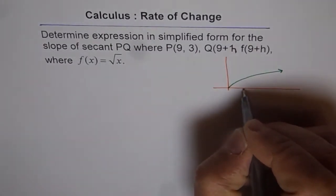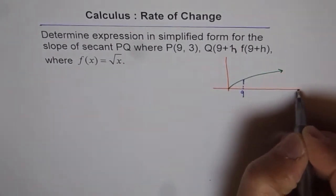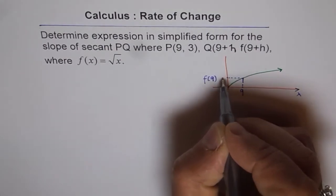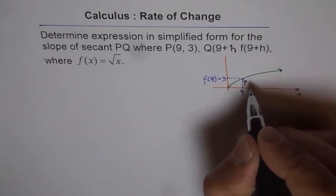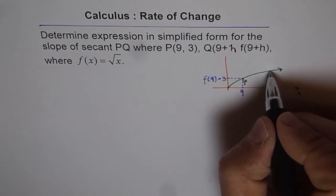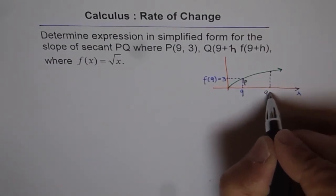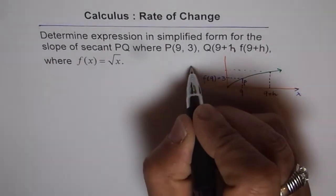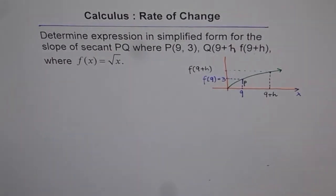So along the x-axis we have x = 9, and along the y-axis we get f(9) = 3. That's point P. Now let's consider another point Q. Q is at the x-value of 9+h, so what is the y-value? The y-value will be f(9+h). That is the y-coordinate of Q.